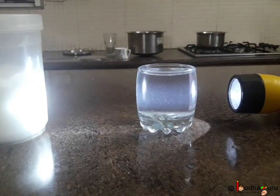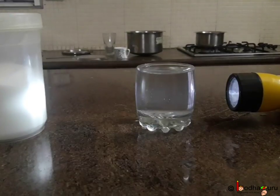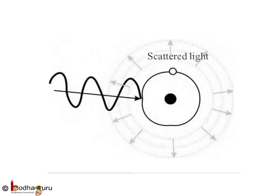But what do we really mean by scattering of light? When any atom or molecule is exposed to light, it absorbs light energy and starts vibrating more. Then it emits some part of that light energy in different directions. This is the basic event happening during the scattering of light.